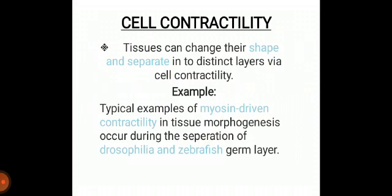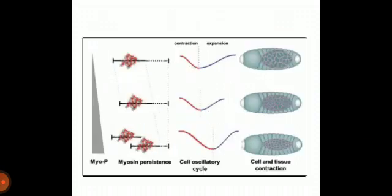The next mechanism is cell contractility. Tissues can change their shape and separate into distinct layers — this is called cell contractility. Just like in muscle cells, myosin can contract different parts of the tissues to change its shape or structure. A typical example of myosin-driven contractility in tissue morphogenesis occurs during the separation of Drosophila and zebrafish germ layers. In the diagram, a myosin-persistence cell oscillatory cycle is shown in which contraction and expansion takes place, and this process is called cell contractility.